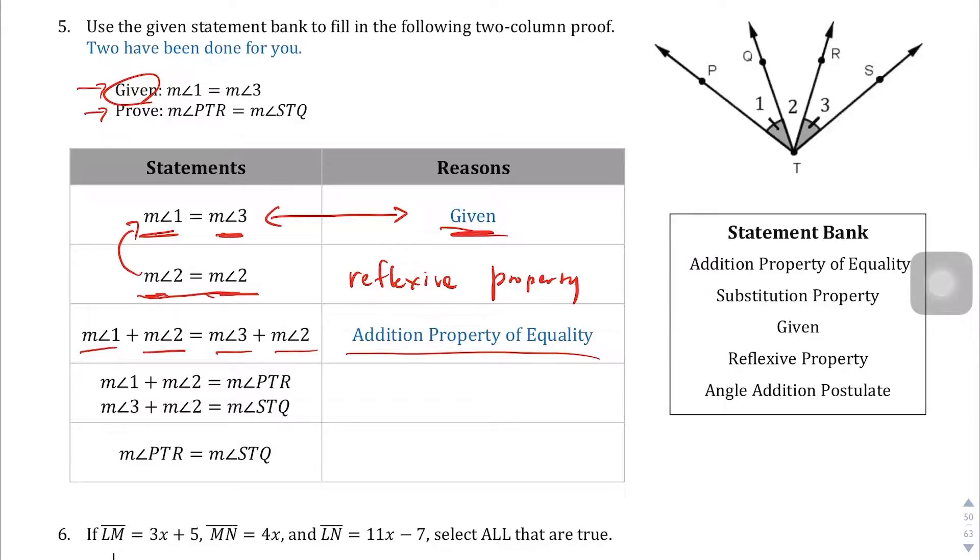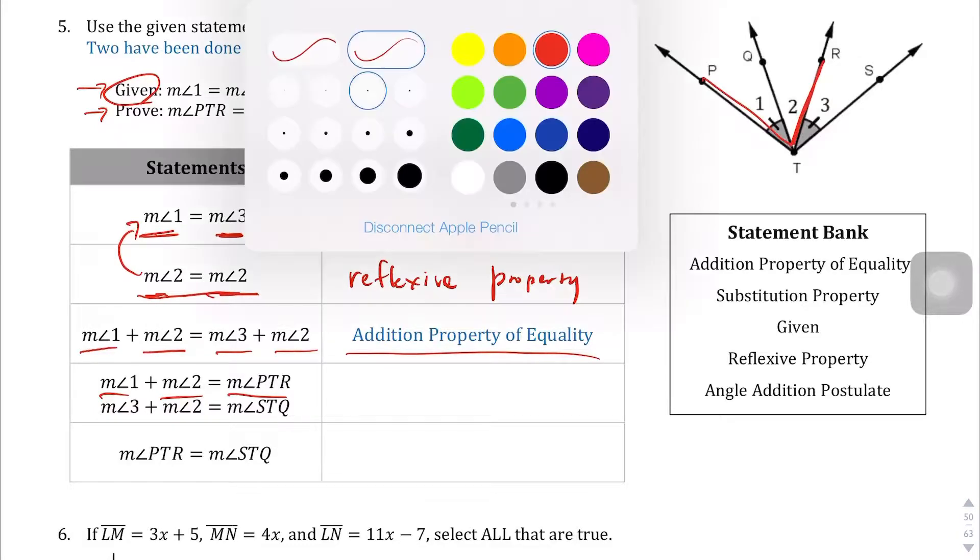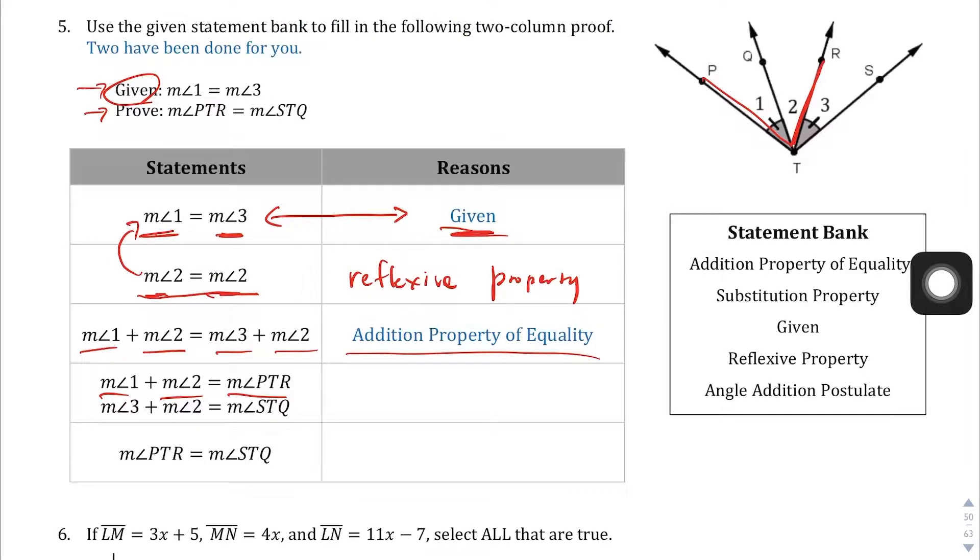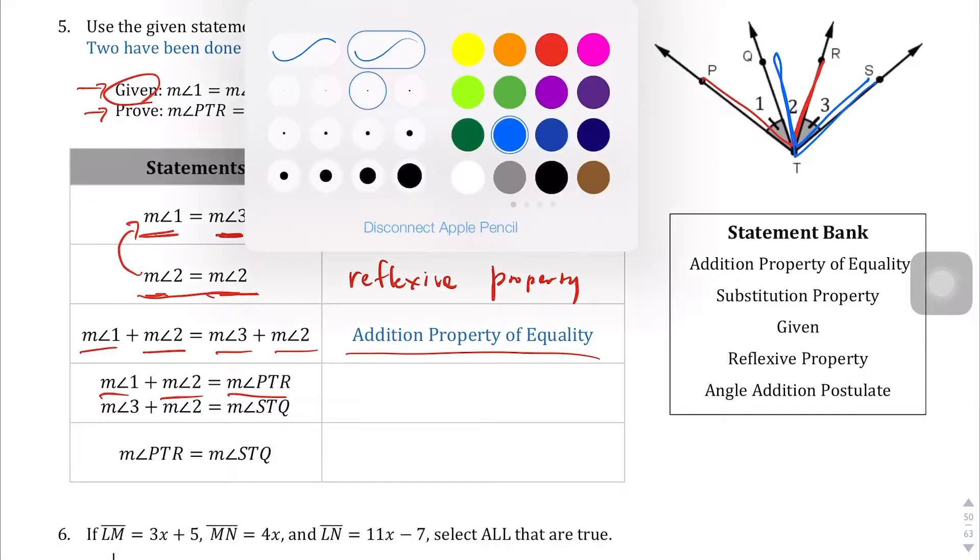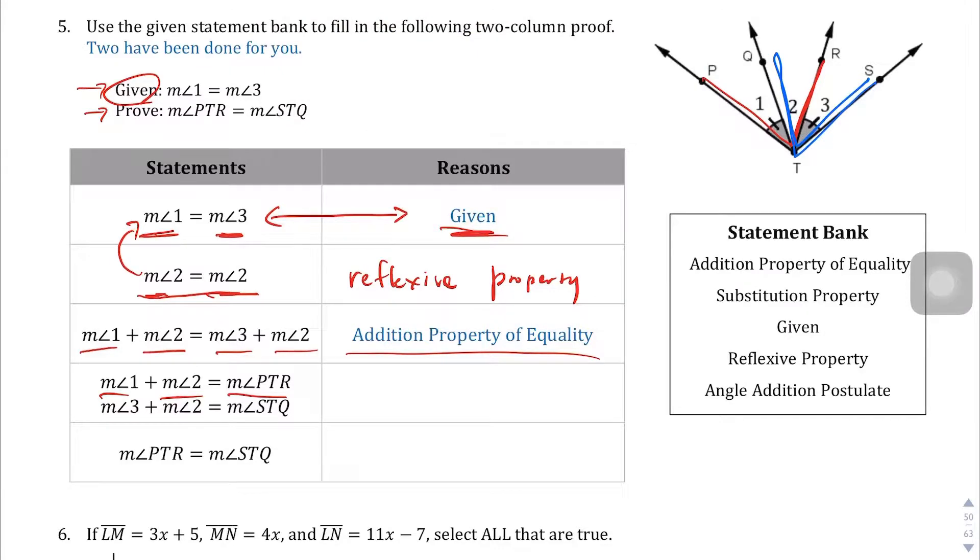And then here we are told that angle 1 plus angle 2 is going to equal angle PTR. So this is going to equal this, and then angle 3 plus angle 2 is going to equal STQ. In both sections, what's happening is that you are taking two angles and putting them together to form a bigger angle, PTR. So this is going to be the angle addition postulate. And then lastly, instead of saying angle 1 plus angle 2, you're just going to call it PTR and STQ. So that is the substitution property.